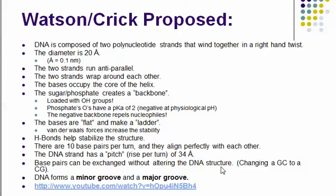The bases — A, T, G, C — are in the core of the helix. That twist, that corkscrew, is what we call the helix. So the bases are on the inside of the nucleic acid — they're kind of embedded in, kind of hidden.